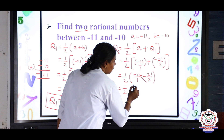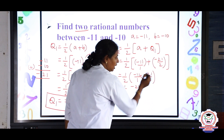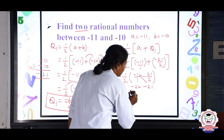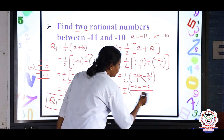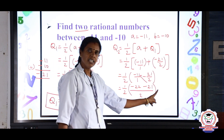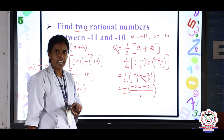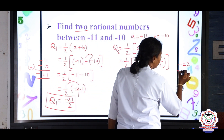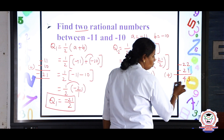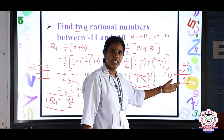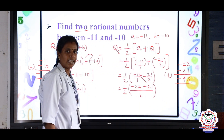Using cross multiplication: 2 × minus 11 = minus 22, and 1 × 21 = 21, over the denominator 1 × 2 = 2. The numerator is minus 22 minus 21. Both are negative integers, so we add: 22 + 21 = 43. Since both are negative, the answer is negative: minus 43. So we have 1/2 × (minus 43/2).